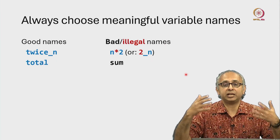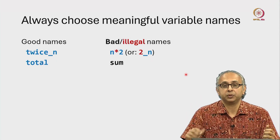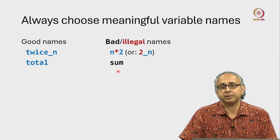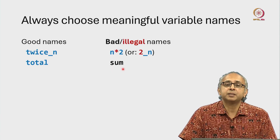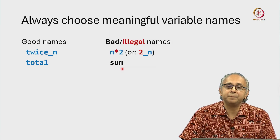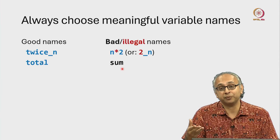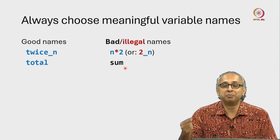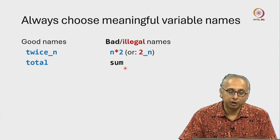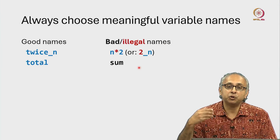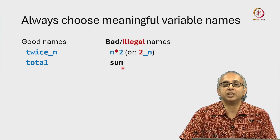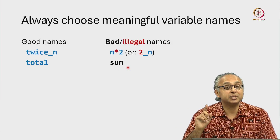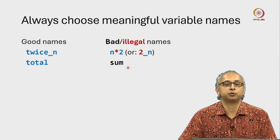Here is another example. If I'm calculating a sum total, I should probably use a variable name like 'total'. I could use the variable name 'sum', but it's not illegal — it's a bad name because sum is a built-in Python function. If you name your own variable sum, you won't be able to use the built-in. In your IDE, you will often see a little squiggly line below such names, warning you that it's a poor choice.